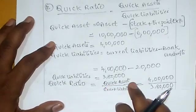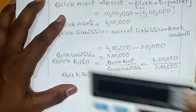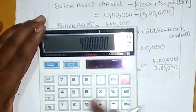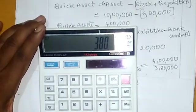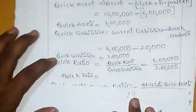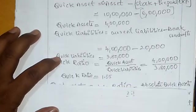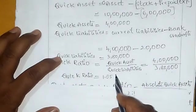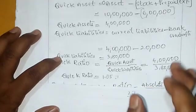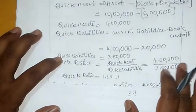Quick ratio = quick assets / quick liabilities = 4 lakhs divided by 3 lakhs 80,000. Calculating this gives 1.05. Therefore, quick ratio is equal to 1.05 is to 1. The ideal quick ratio is 1:1, and since 1.05 is greater than 1, this is a satisfactory quick ratio.